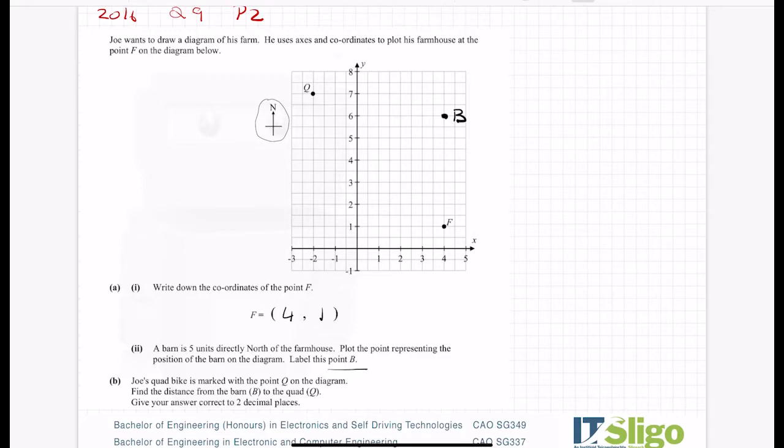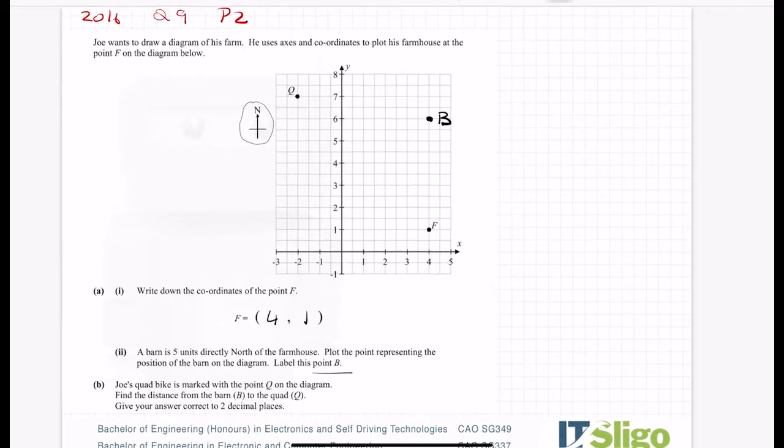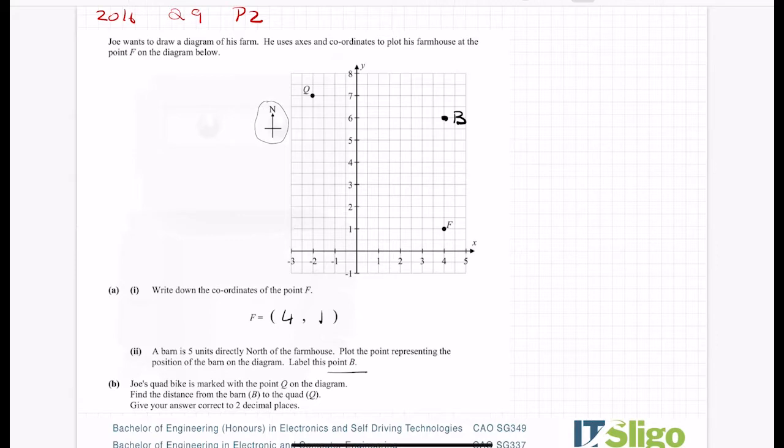Joe's quad bike is marked with the point Q on the diagram. So this is Joe's quad bike. Find the distance from the barn B to the quad Q. Give your answer correct two decimal places. Well, that's the first thing I need to do is write down the coordinates of the point B. So it is 4, 6. And I'm finding the distance from the barn B to the quad Q. So Q is minus 2 up to 7.